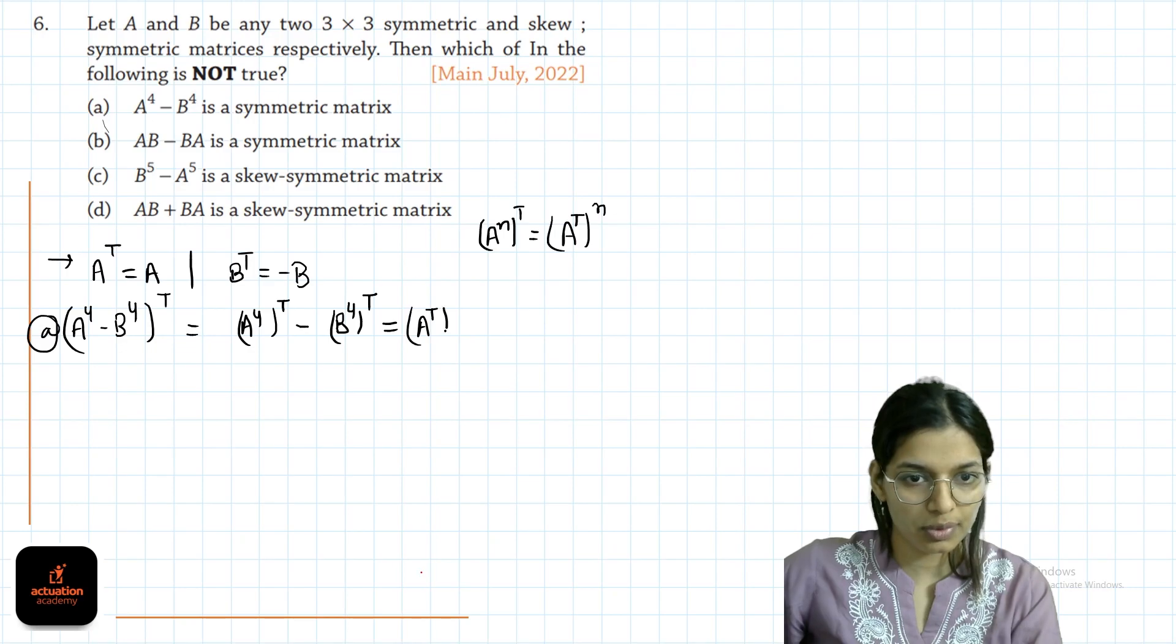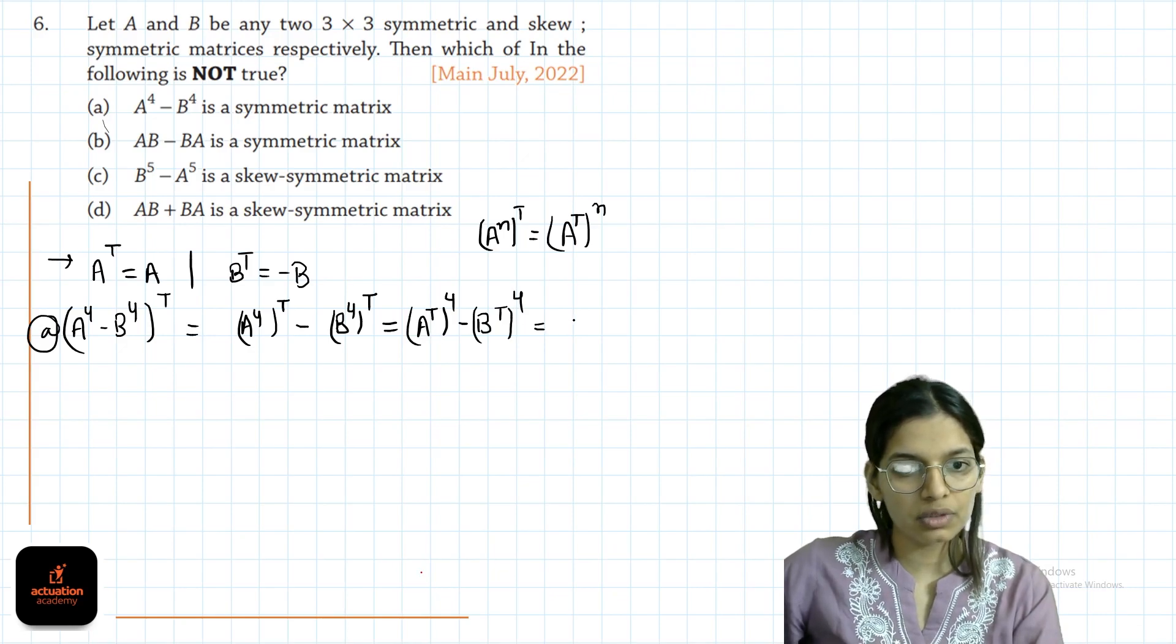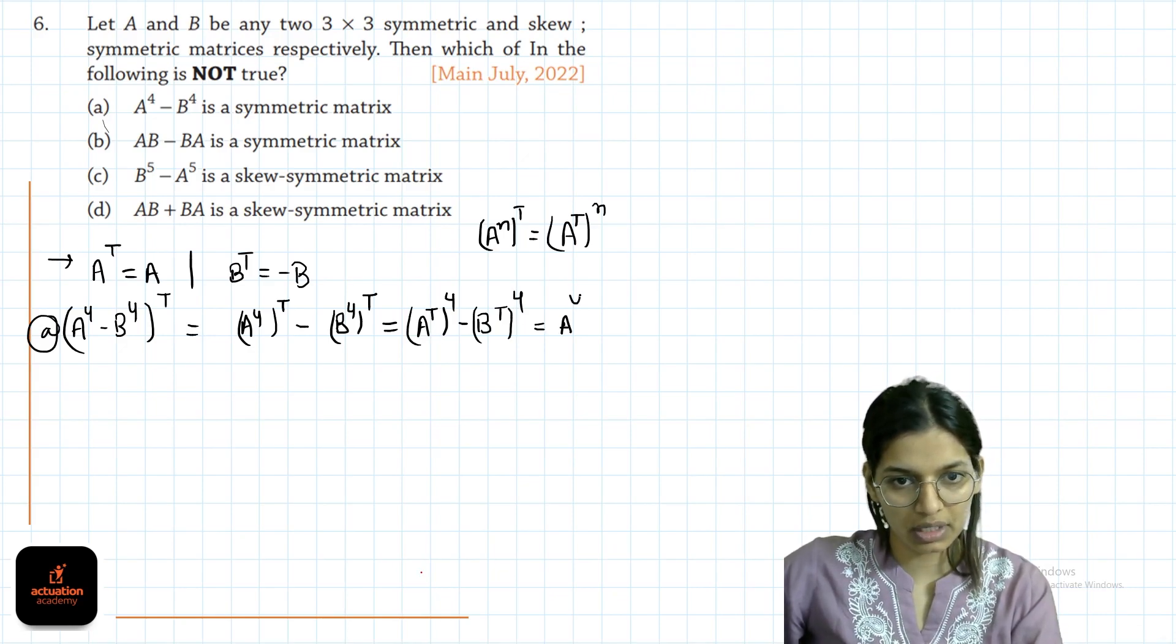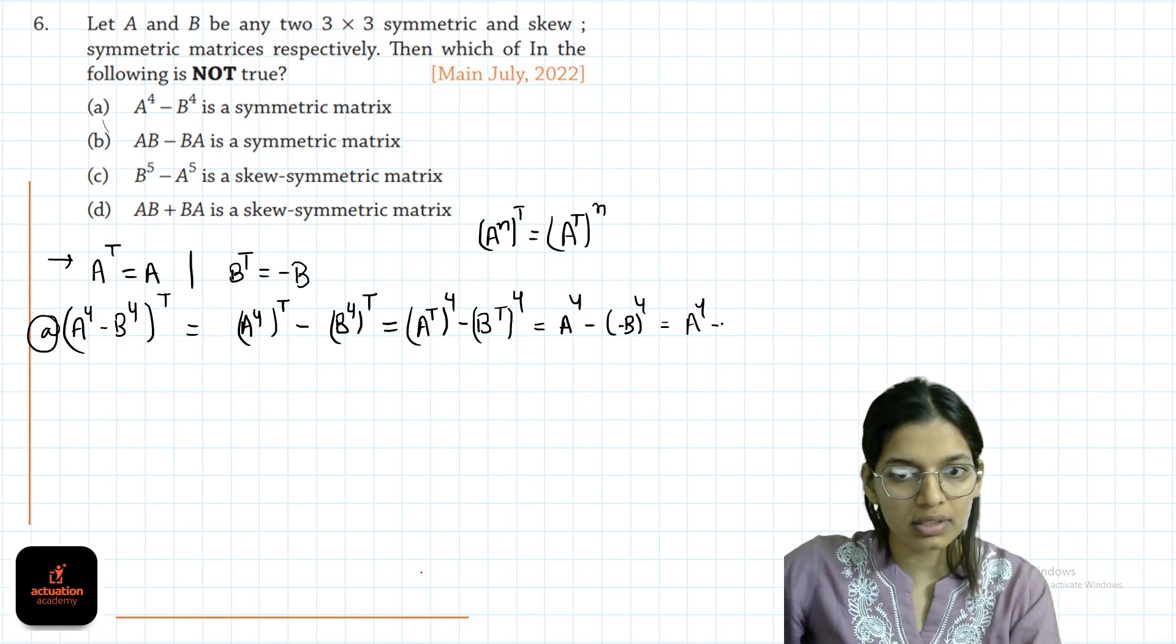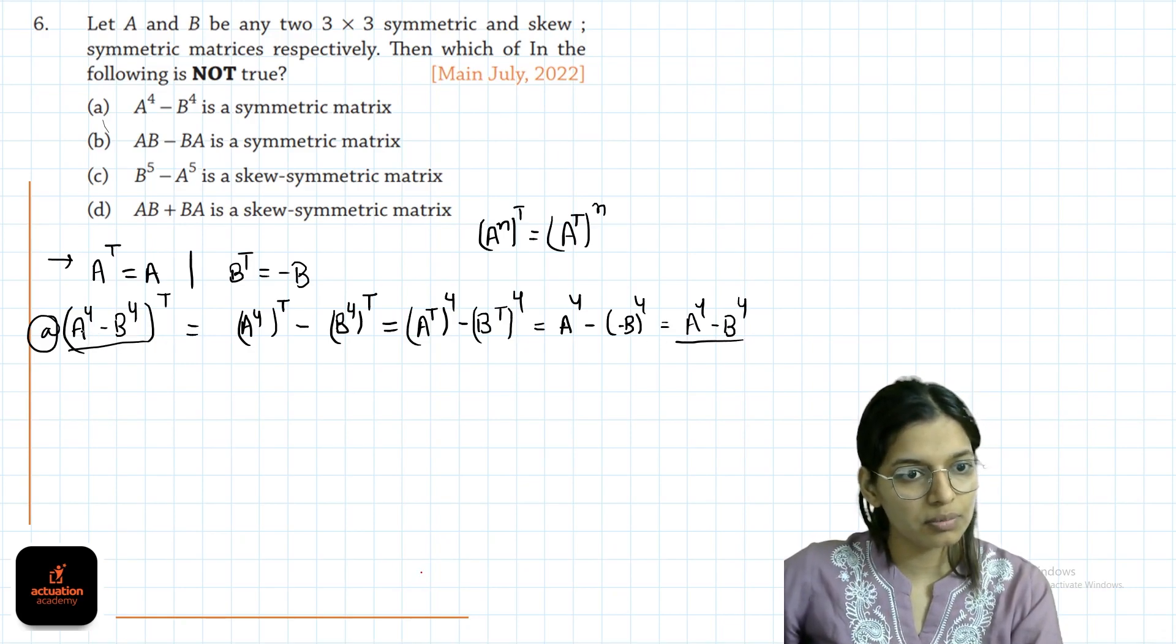It will be A transpose power 4 minus B transpose power 4. And we are given with A transpose is A. So it will be A power 4 minus minus B power 4, which is A power 4 plus B power 4. The matrix is symmetric since its transpose is same as the matrix.